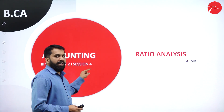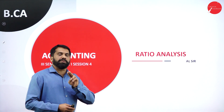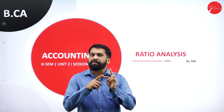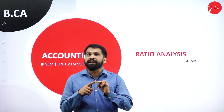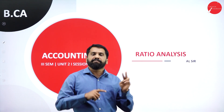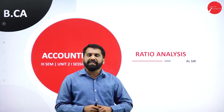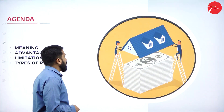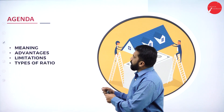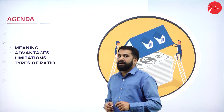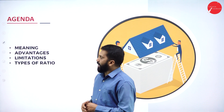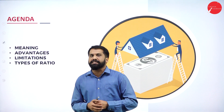Don't be confused about which topic we are doing. We are still in unit two. In unit two you have two bifurcations: part one is financial management theory and part two is ratio analysis. Once we complete ratio analysis, your second chapter will be ended. The agenda for the day is the meaning, advantages, limitations, as well as types of ratio.